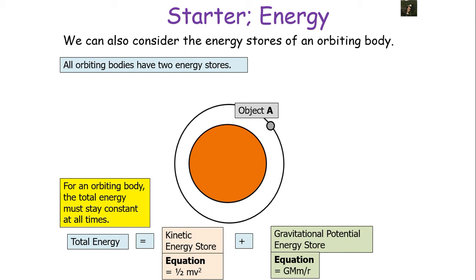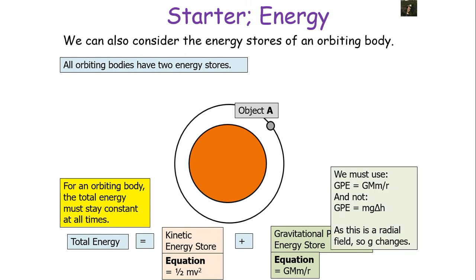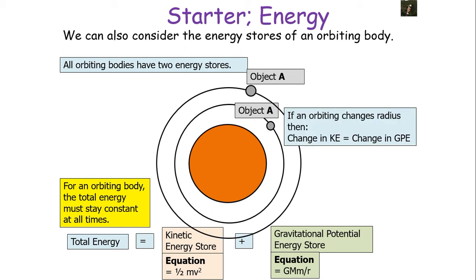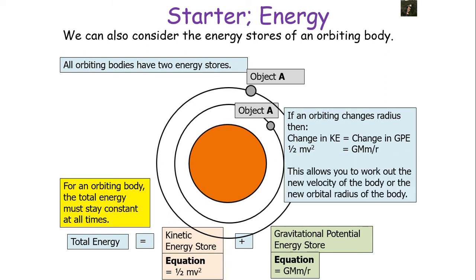The kinetic energy store is ½mv², and the gravitational potential energy store equals GMm/r. Note we can't use mgΔh as at GCSE, because this is a radial field over a large distance where the value of g changes noticeably. If an orbiting body changes radius, the change in kinetic energy equals the change in gravitational potential energy: ½mv² = GMm/r. Cancelling the small m's, you can rearrange to find the new velocity v or the new orbital radius r.